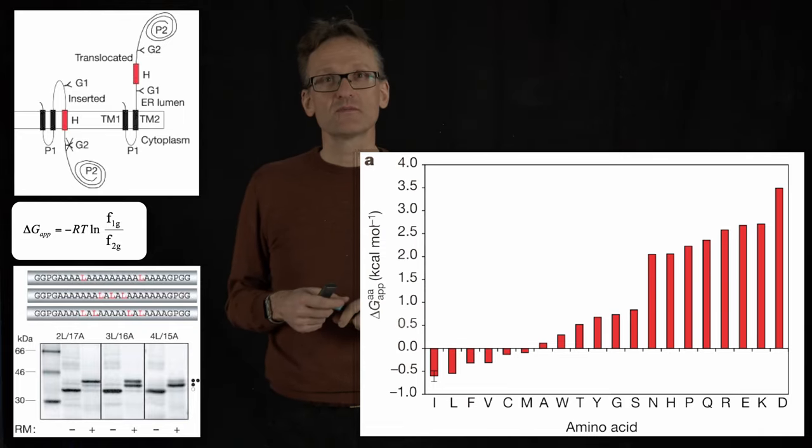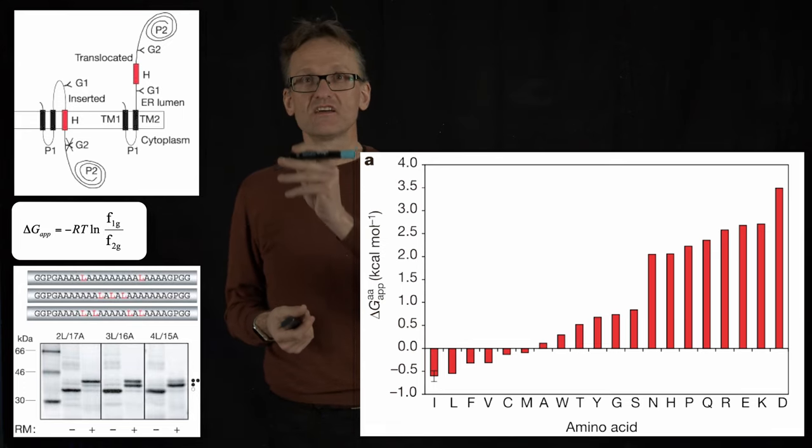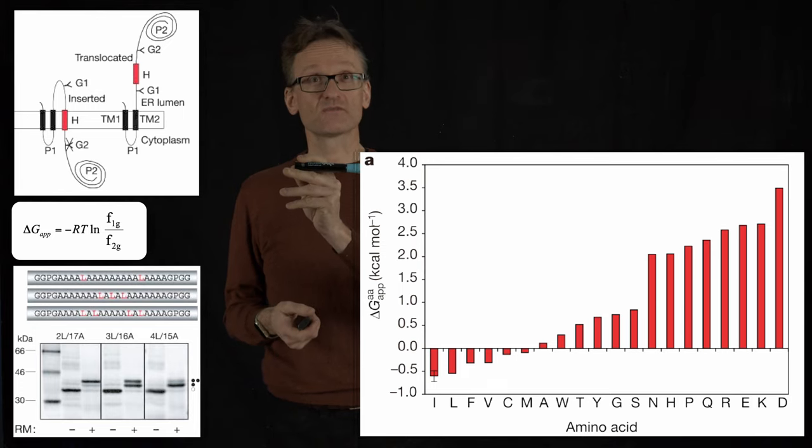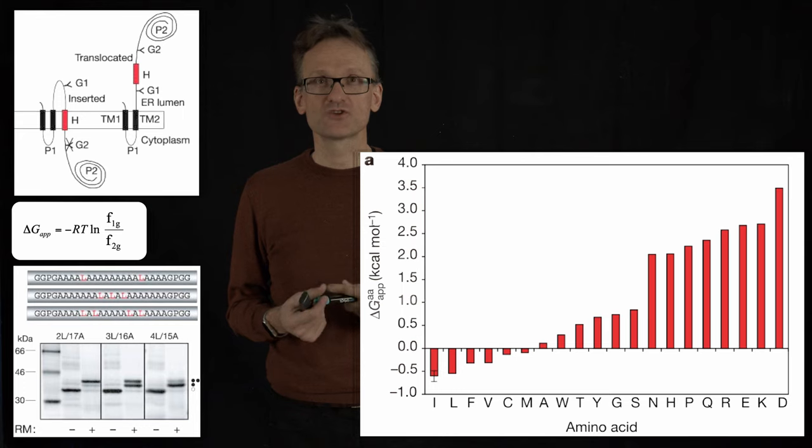But don't you remember that I said it might cost 15 to 20 kcal to insert a charge? Here the y-axis says 3.5. So something is off here, either in this prediction or in the insertion or in the membrane. Why?